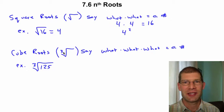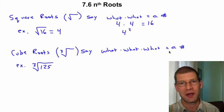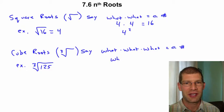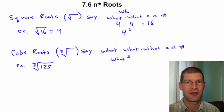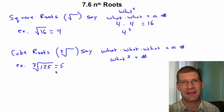Cube roots then, same sort of thing, but now it's saying what times itself times itself again equals the number. Or really it's saying what to the third, kind of like this you could say is what squared equals the number, now it's saying what to the third equals the number. So this here has to be 5 because 5 times 5 times 5 is the 125.